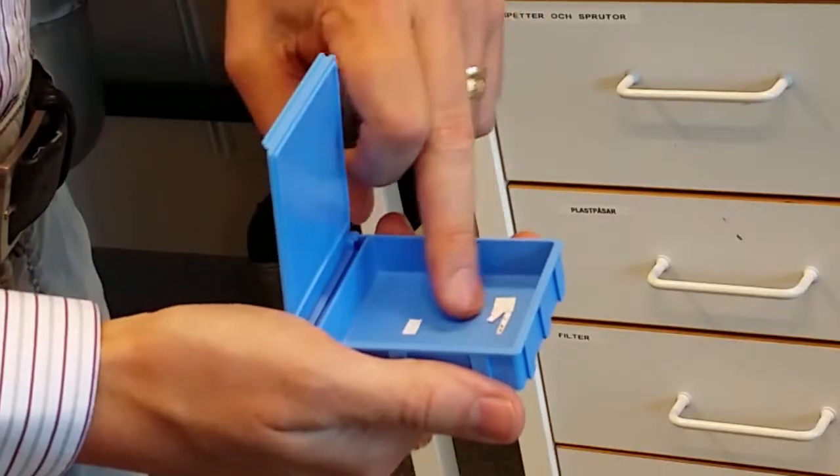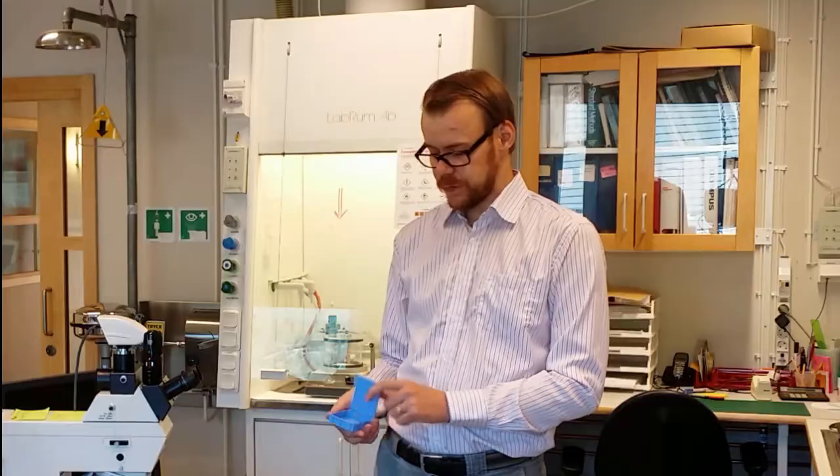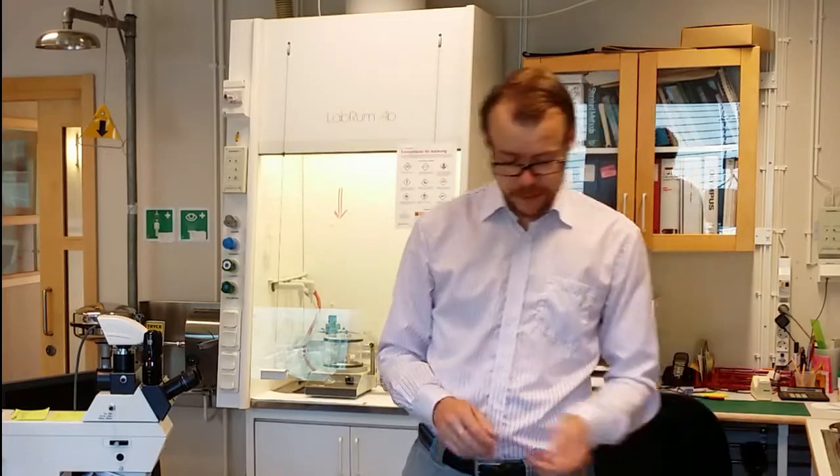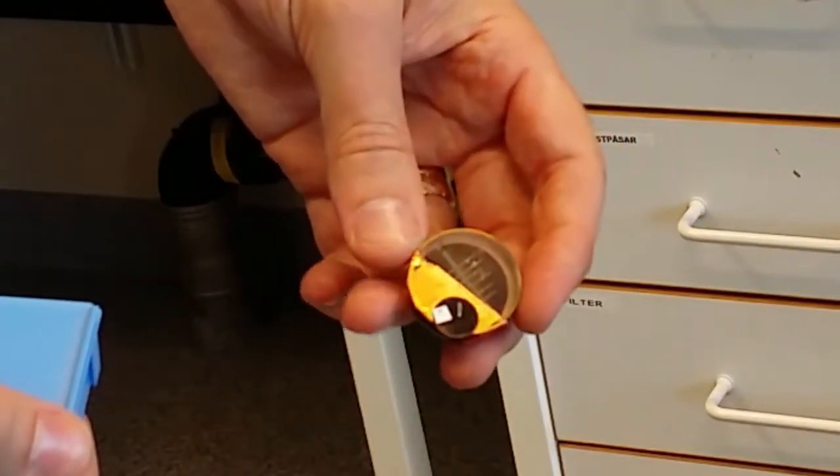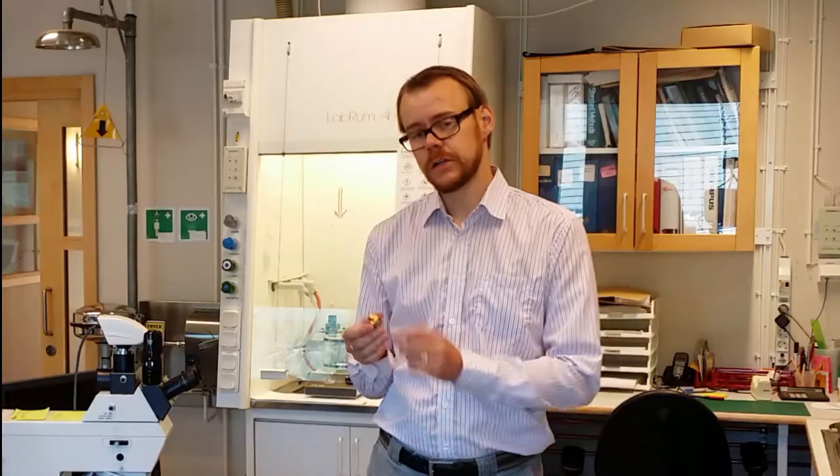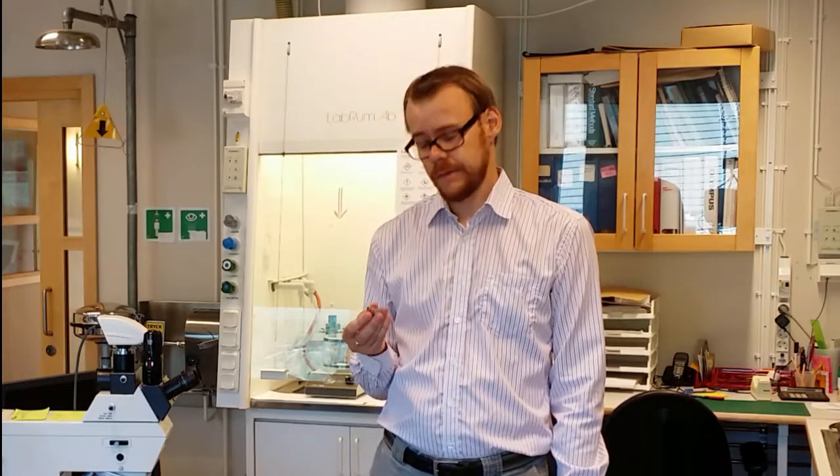Hi, if you have samples, for example paper substrates, that you want to embed in plastic so they become like this, you need to grind and polish the surface before it can be examined. Today I'm going to show you how to make that and how to create this mirror-like surface.